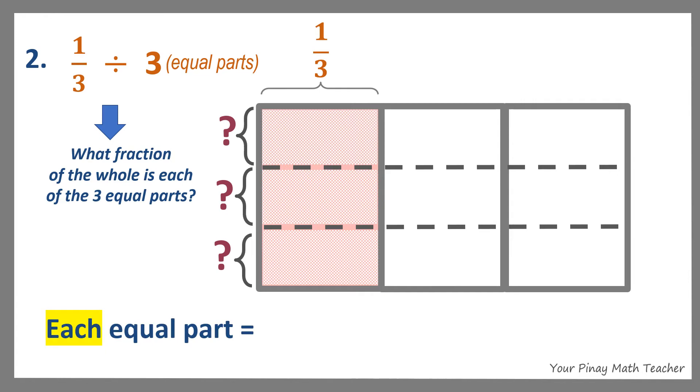Each equal part is the same as 1 out of 3, or 1 third, of the shaded part 1 third. By counting, the answer to this is 1 out of the total number of equal parts, which is 9. We can also get 1 ninth by getting the value of 1 third of 1 third, which is the same as 1 third times 1 third. So 1 times 1 is 1, 3 times 3 is 9.